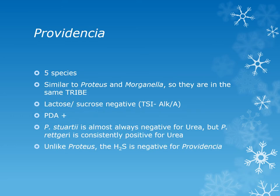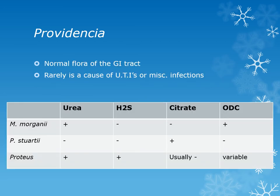There are five species of Providencia, in the same tribe as Proteus and Morganella. They are lactose and sucrose negative, so TSI is alkaline over acid. They are phenylalanine deaminase positive, and Providencia is almost always urease negative, but Providencia rettgeri is consistently urease positive. Unlike Proteus, H2S is negative for Providencia. The H2S positive organisms are Salmonella, Citrobacter, and Proteus. Providencia is normal gut flora and occasionally causes urinary tract infections or miscellaneous opportunistic infections.